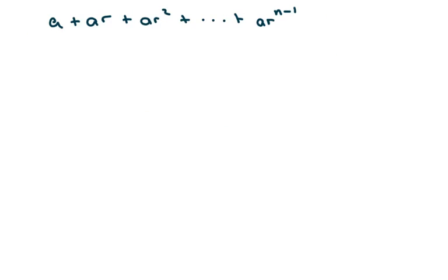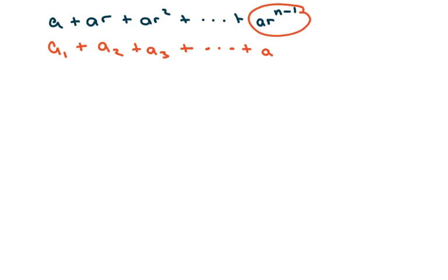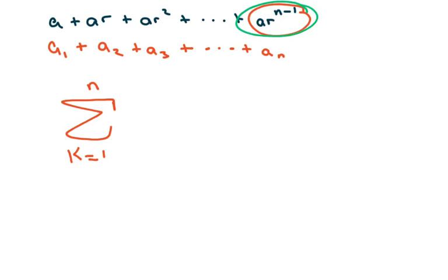And the last one — again, I'm going to look at this. So if this is a(1) + a(2) + a(3) + ... + a(n), what I'm going to do is write k equals 1, going to n, and I'm just going to write A times r to the k minus 1. If you plug in your index numbers into this formula, it will work. And that's all. Thank you, have a nice day. Bye-bye.